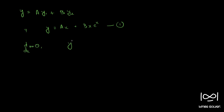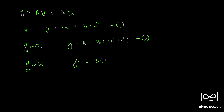Applying d/dx to equation 1, we get y' = a + b(xe^x + e^x). This is equation 2. Since we have two arbitrary constants, we need to differentiate one more time to eliminate them. So we get y'' = b(xe^x + e^x + e^x), therefore y'' = b(xe^x + 2e^x). This is equation 3.